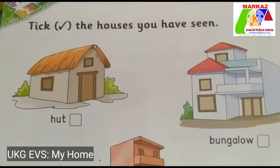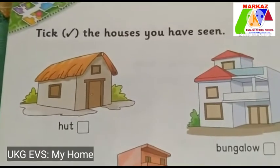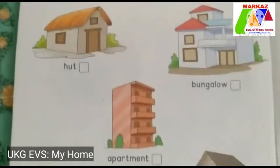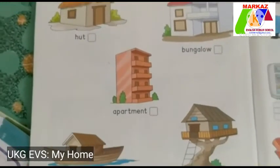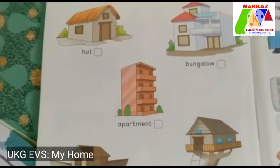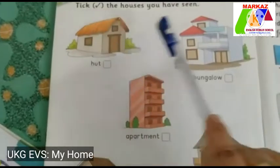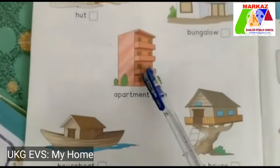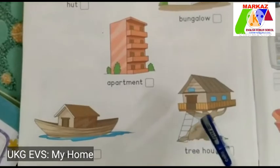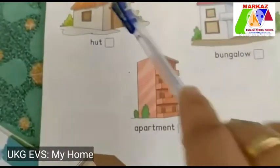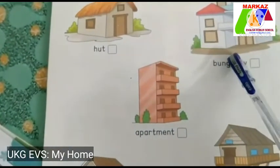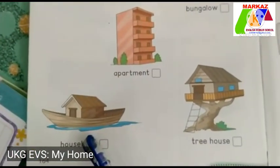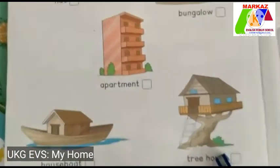All of you take page number 164. Types of houses. Here we can see different types of houses: hut, bungalow, apartment, houseboat, and treehouse.